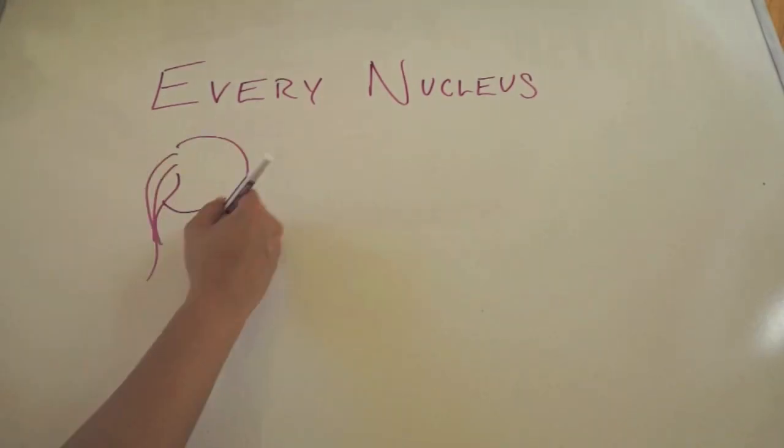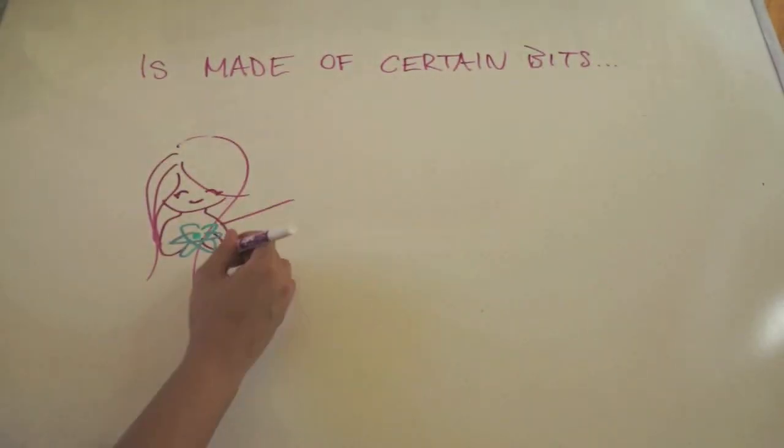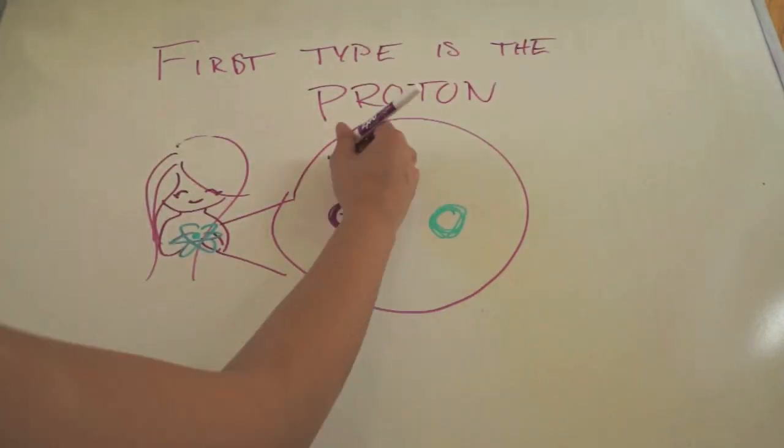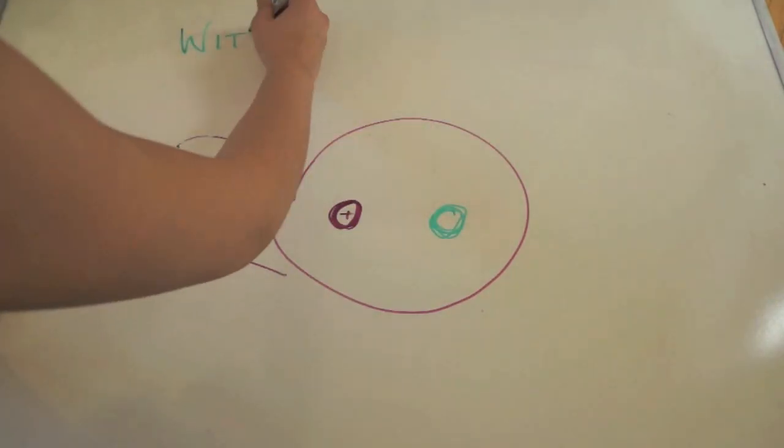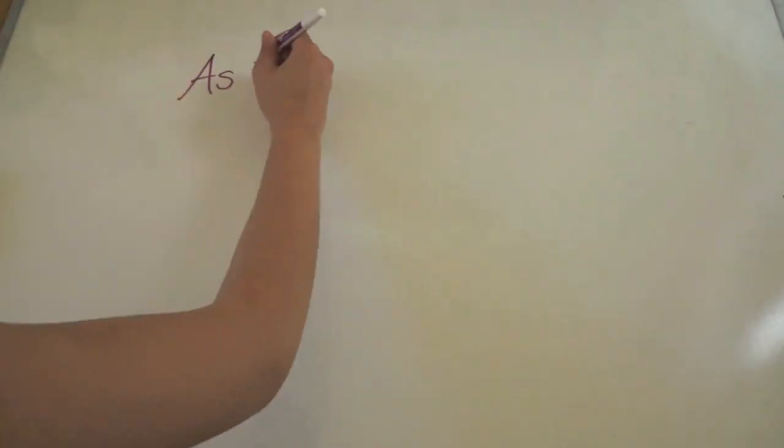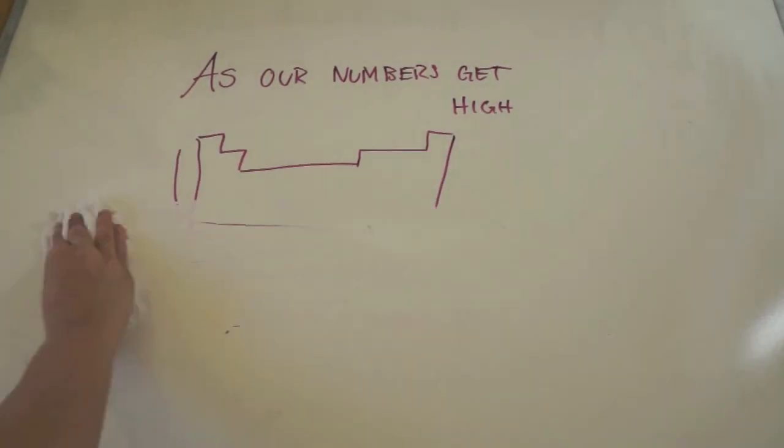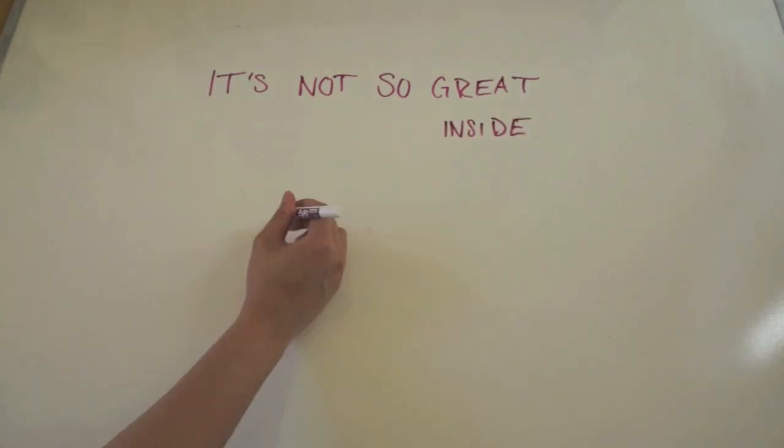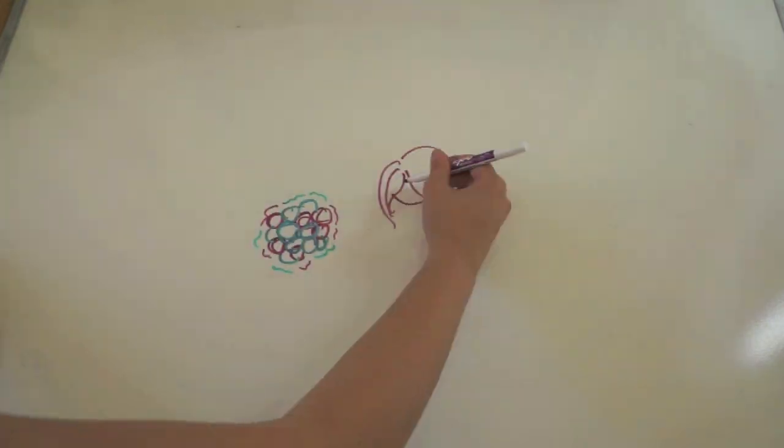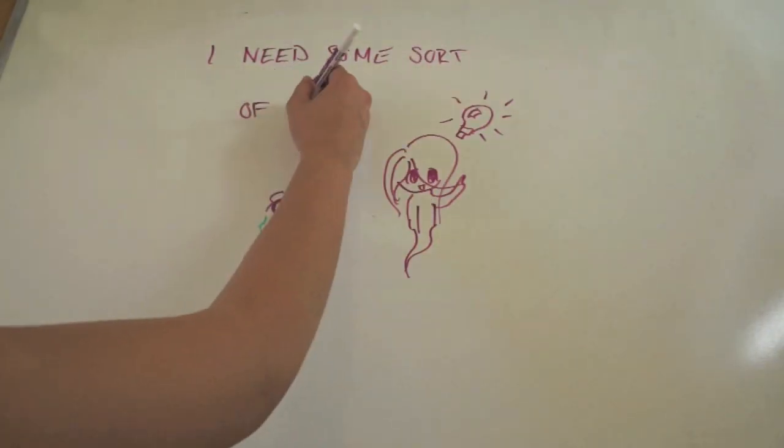Every nucleus is made of certain bits. The first type is the proton, with neutrons things go wrong. As our numbers get high, it's not so great inside. This composition is weak, I need some sort of tweak.